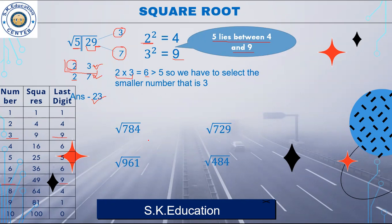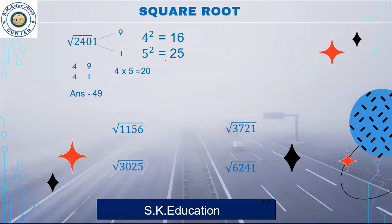For these four examples, you will give me the answer in the comment box. Next example is 2401. In this 2401, we will again make groups of 2. The last digit is 1, and 1 corresponds to 9 and 1.